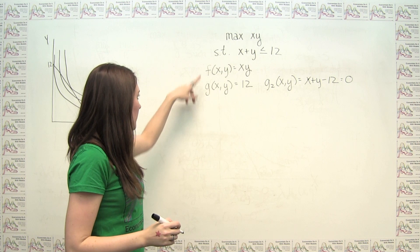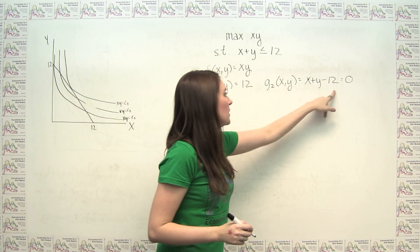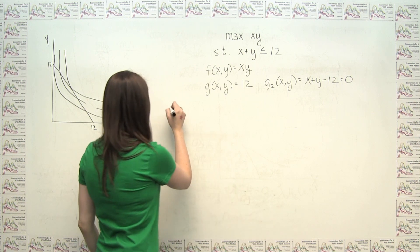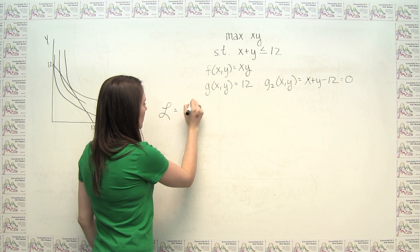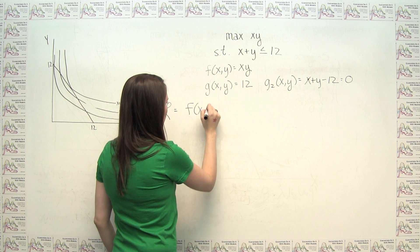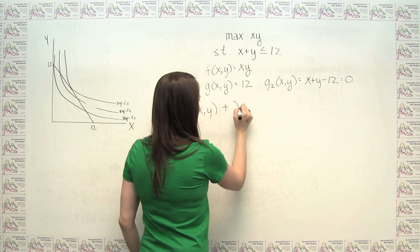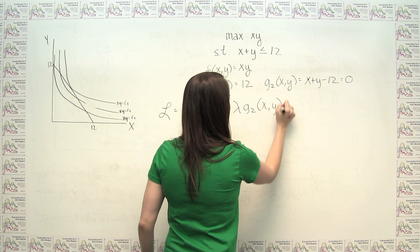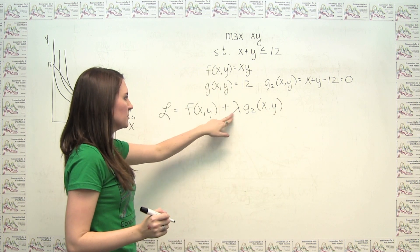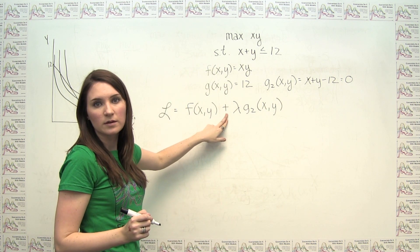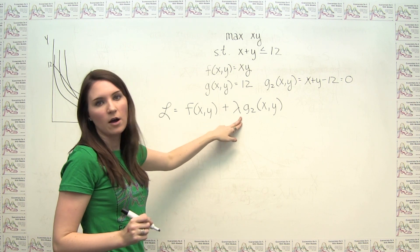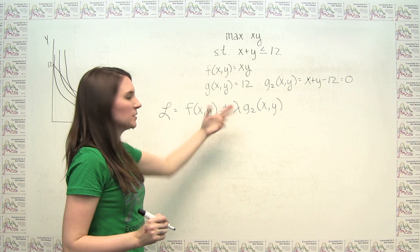So now that we have defined our f of xy and our g2 of xy, we can construct our Lagrange multiplier. And we said that this was just f of xy plus lambda times g2 of xy. And again, we said that it didn't actually matter whether this was a plus or a minus, we're just going to get a slightly different interpretation on this value of lambda if we use a minus rather than a plus.